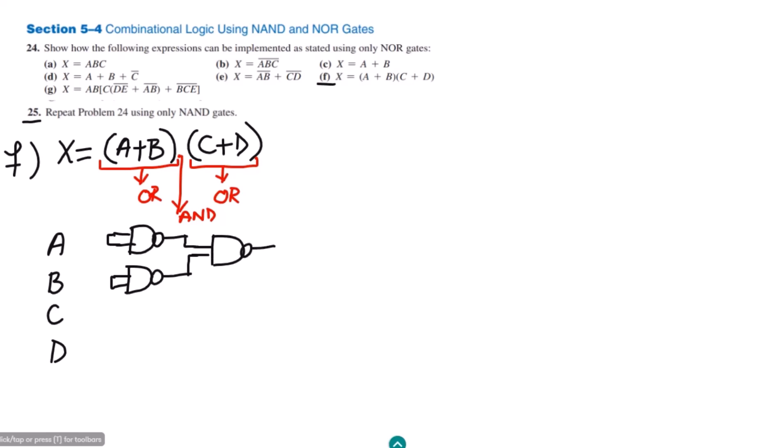So this is the first OR gate and the input lines are here. The first input is given to it, the second is to it, and at the output of it I will get A plus B.